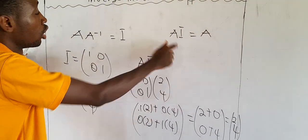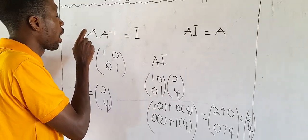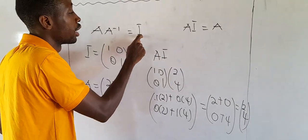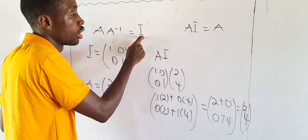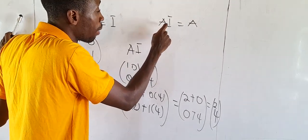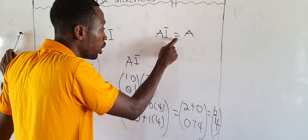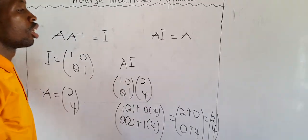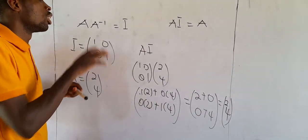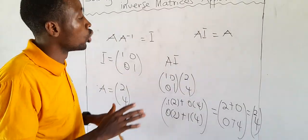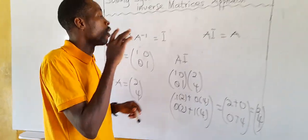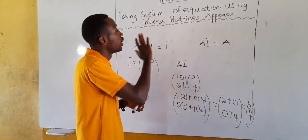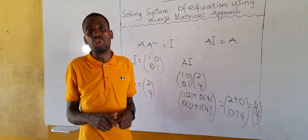So let's remember these two things: when we multiply a matrix by its inverse, we get the identity matrix; and when we multiply a matrix by the identity matrix, the answer will be the matrix itself. Take notice of these two things because we are going to use them when solving a system of equations using the inverse matrix approach.